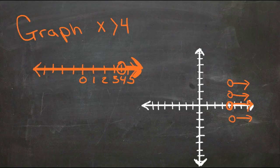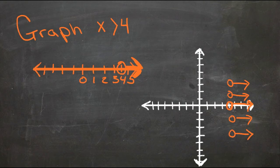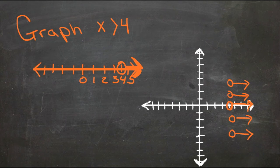or down here, and so on. Y can be anything we want, as long as x is greater than four. So instead of just having a single line going to the right, we're going to have a whole shaded area.